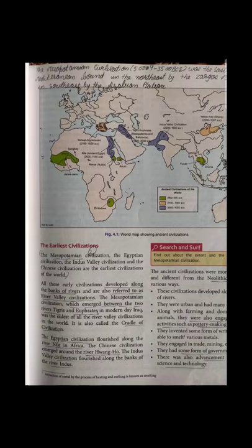This civilization is also known as Harappan Civilization. I will tell you why it is known as the Harappan Civilization. But firstly, you need to understand that Indus Valley Civilization flourished along the bank of the river Indus, and that is the main reason it is named Indus Valley Civilization.